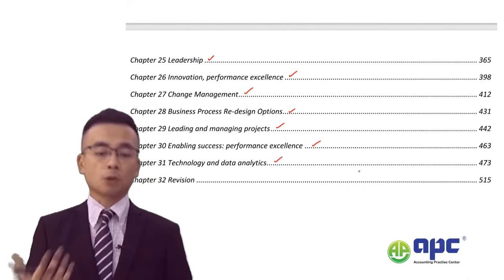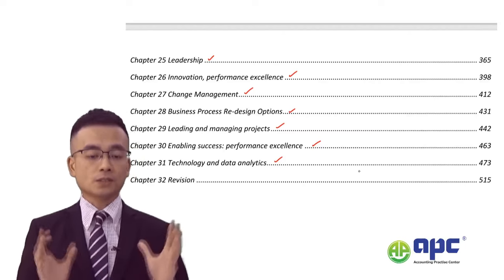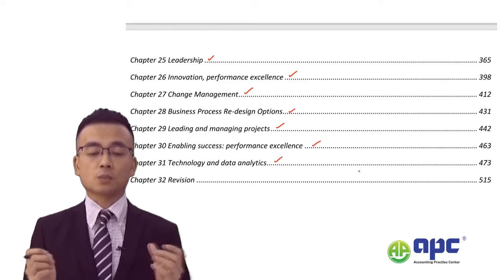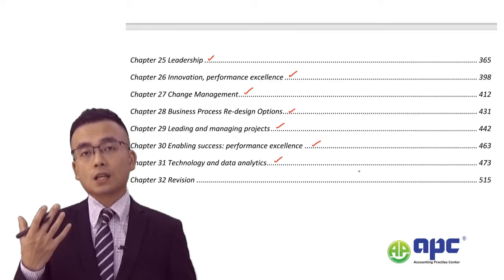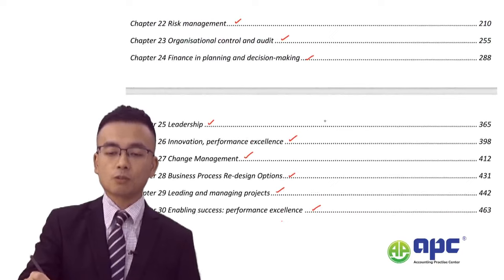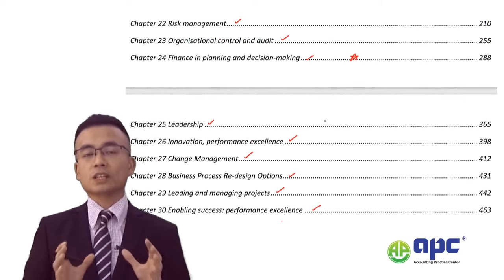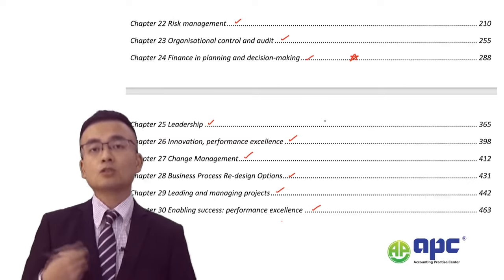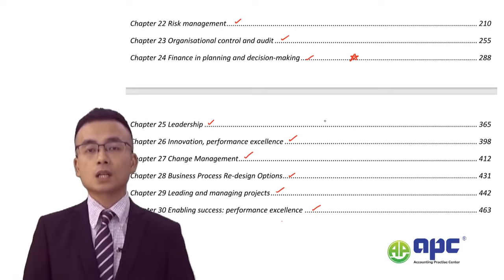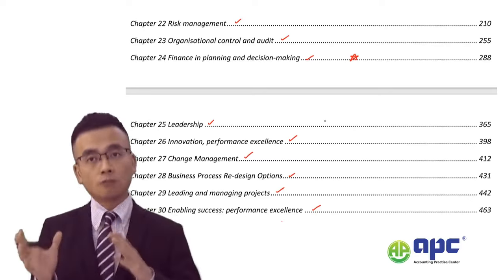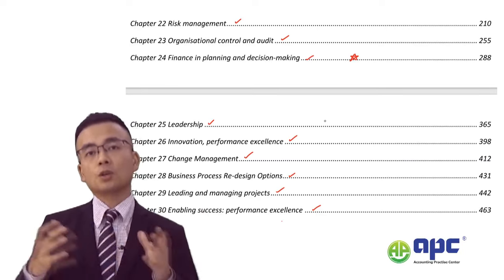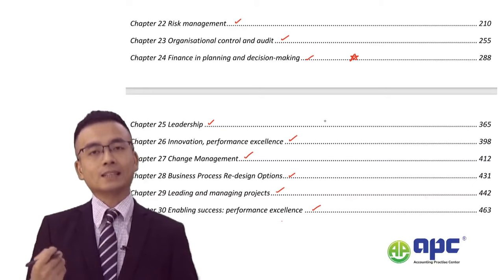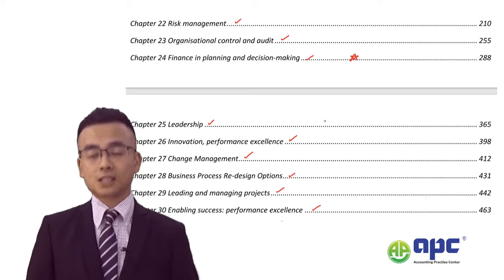From my experience, chapter 31 on technology and data analytics is commonly examined together with chapter 24 on financing, planning, and decision making. The examiner will give you a scenario — for example, a company considering investing in a new cloud computing system, showing NPV calculations — and require you to comment from financial and non-financial perspectives on whether to choose option one, two, or three. Make sure your chapter 24 knowledge is absolutely sound so you can achieve very high marks in the SBL exam.